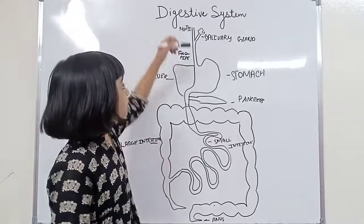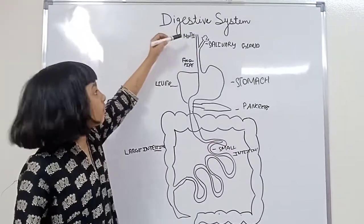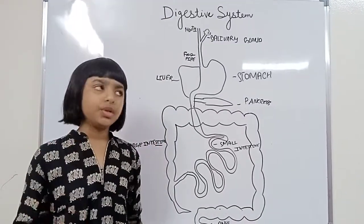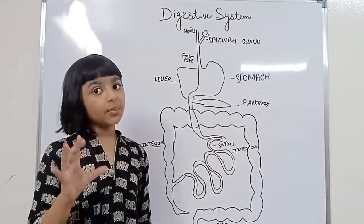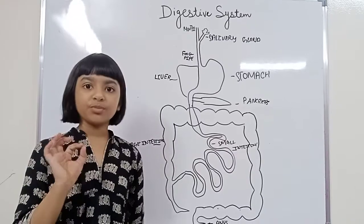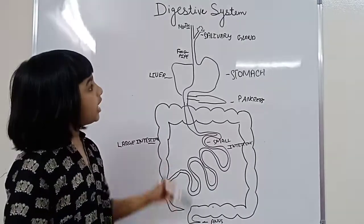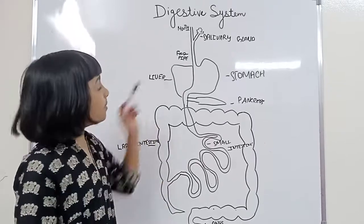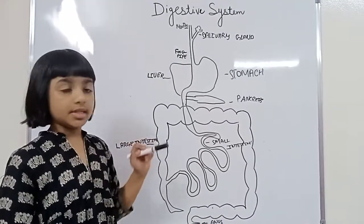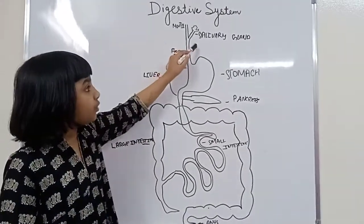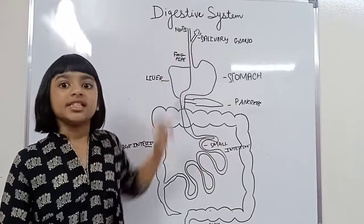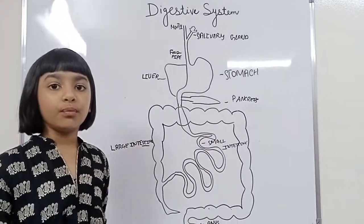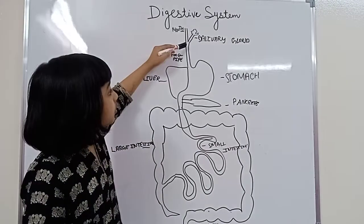The digestive process starts from our mouth, where all your food is chewed. The teeth will break your food into smaller pieces. Then your saliva, which is a digestive liquid, will mix with your food. The saliva is produced by the salivary gland and it will mix with your food.